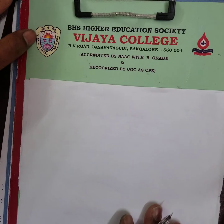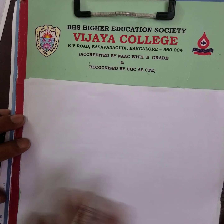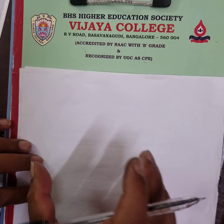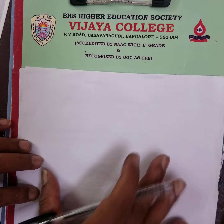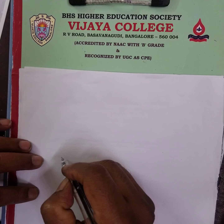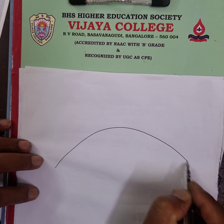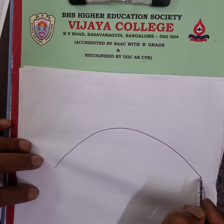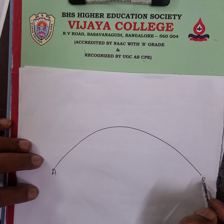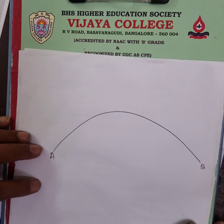The string is also under some tension T. So tension, mass per unit length, and gravity all play a role in determining the wave speed.